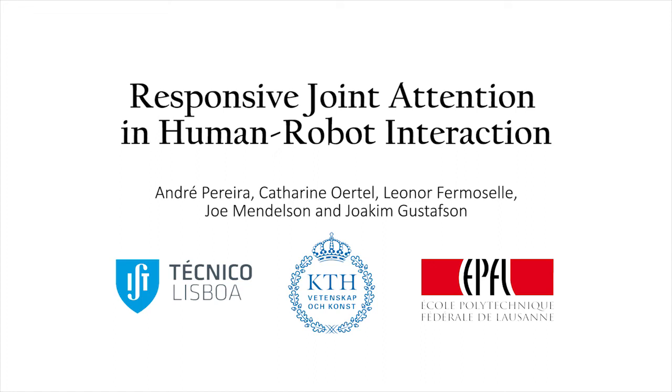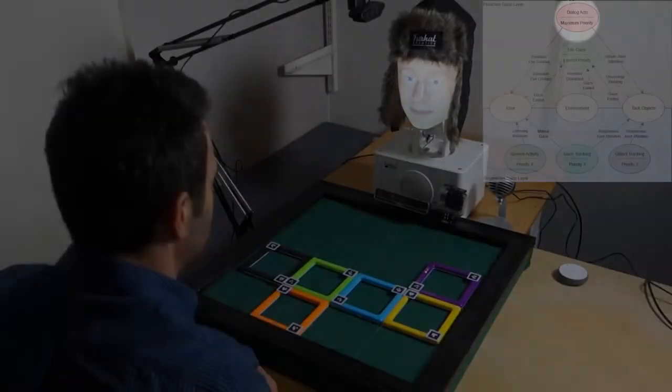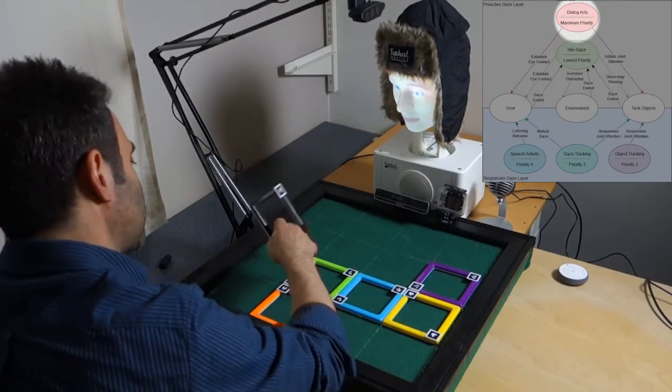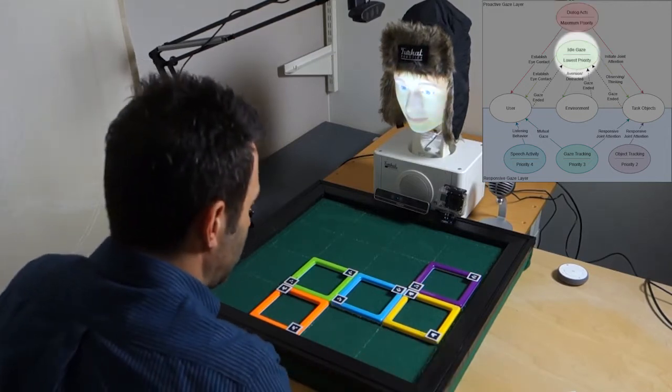In this work, we present a gaze system that generates responsive joint attention in human-robot interaction. In addition to initiating joint attention processes, our system autonomously responds to participants' multimodal cues that reveal their attention.